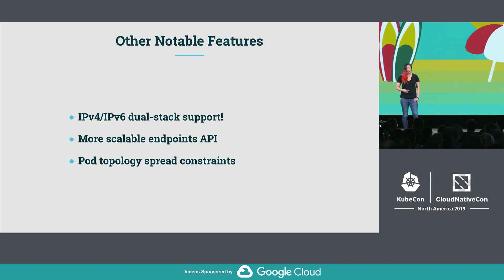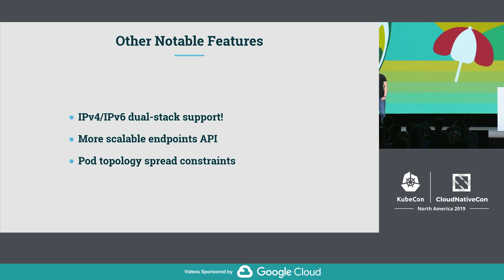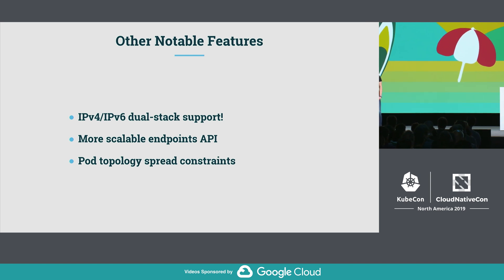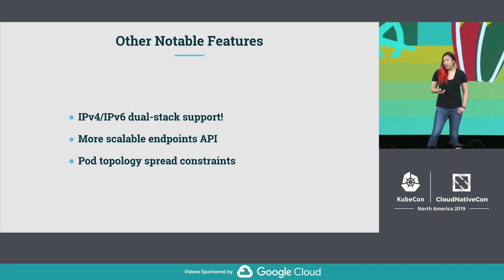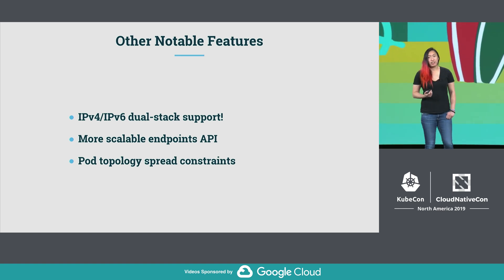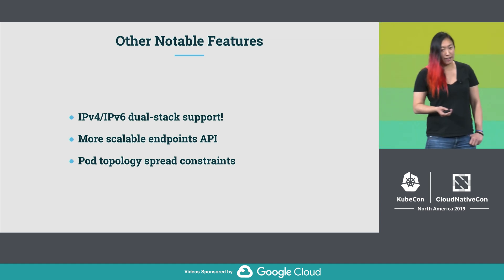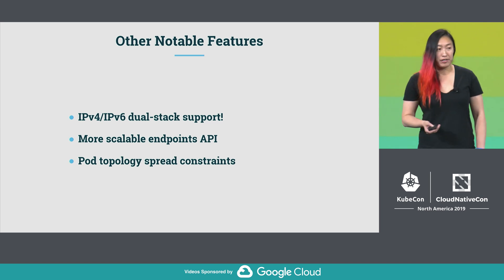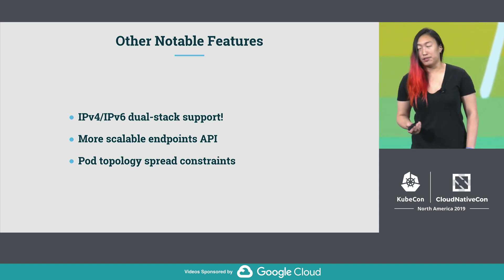Last but not least, I want to mention other notable features shipped in this release. There's a keynote tomorrow dedicated to IPv4/IPv6 dual-stack support, so I won't go into too much detail here. As we see larger and larger deployments of Kubernetes out in the wild, the design continues to be optimized — the new Endpoint Slice API is an example of that optimization. Lastly, the pod topology spread constraints allows you to control how your pods are distributed across different failure domains. For example, if you run a multi-availability zone cluster, you can now tell Kubernetes how you want to spread your pods across the different availability zones — super useful if you want finer control over how things fail.